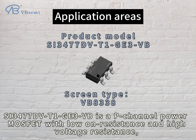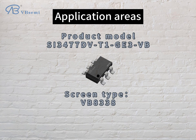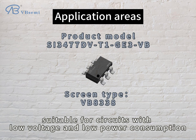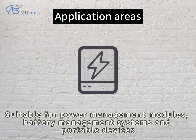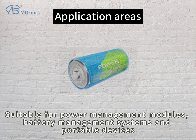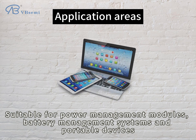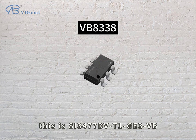SI3477DVT1GE3BB is a P-Channel power MOSFET with low ON resistance and high voltage resistance, suitable for circuits with low voltage and low power consumption, suitable for power management modules, battery management systems, and portable devices.